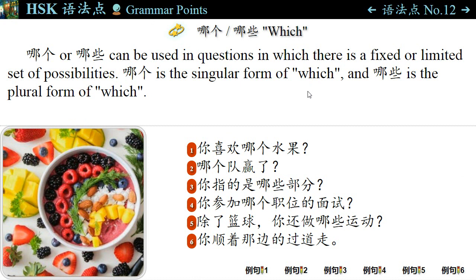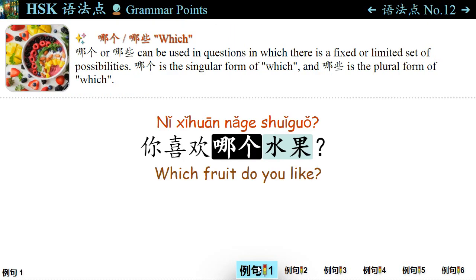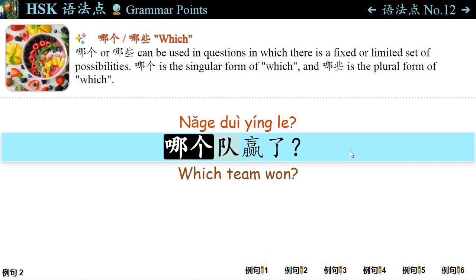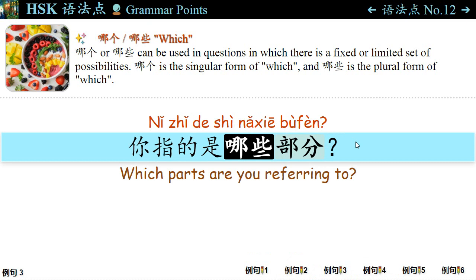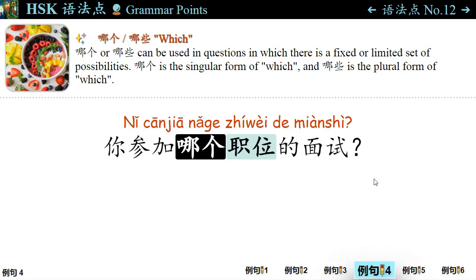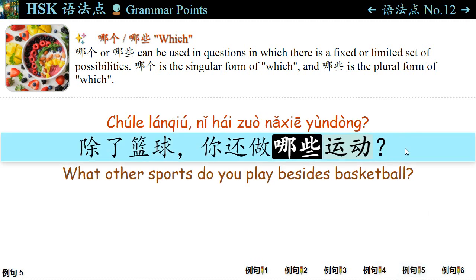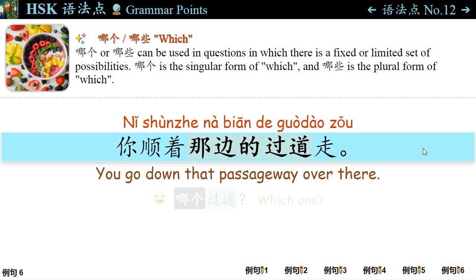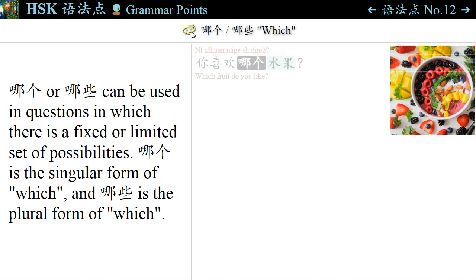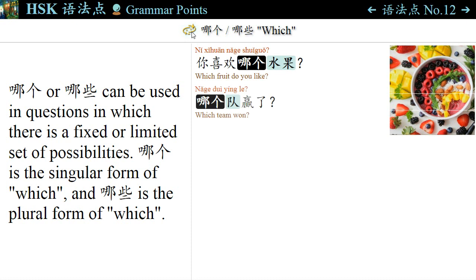语法点十二: 哪个 or 哪些 can be used in questions in which there is a fixed or limited set of possibilities. 哪个 is the singular form of 'which', and 哪些 is the plural form of 'which'. For example: 你喜欢哪个水果? — Which fruit do you like? 哪个队赢了? — Which team won? 你指的是哪些部分? — Which parts? 你参加哪个职位的面试? — Which post? 除了篮球，你还做哪些运动? — What other sports do you play? 你顺着那边的过道走? — 哪个过道? — Which one?